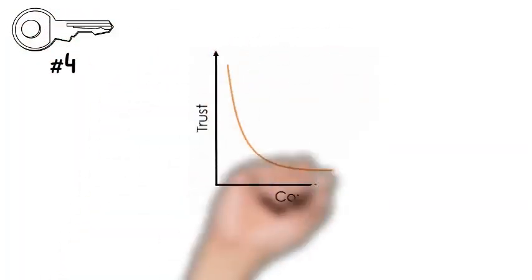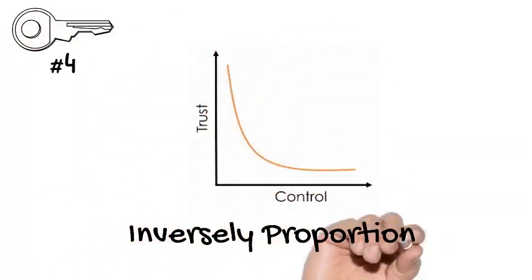Key concept number four tells us that trust and control are inversely proportional. So what that means is when you are attempting to exert control or somebody is attempting to exert control over you, trust will inherently drop. And to the extent that we try to give up control or we allow ourselves to give up control, we will create a situation of higher trust.